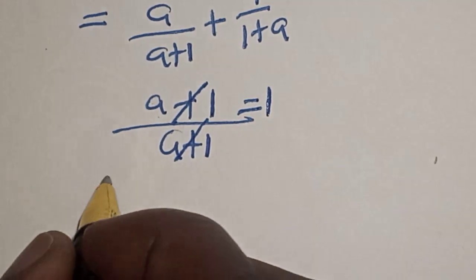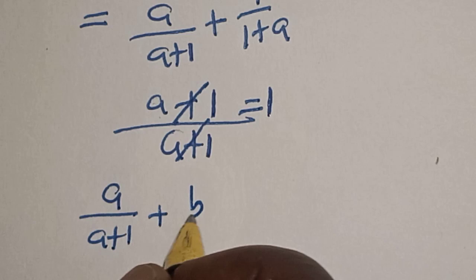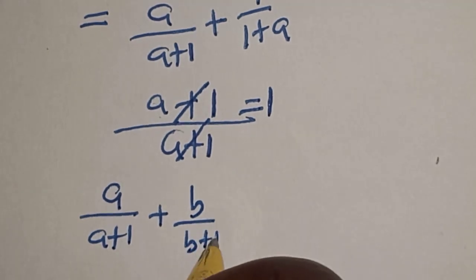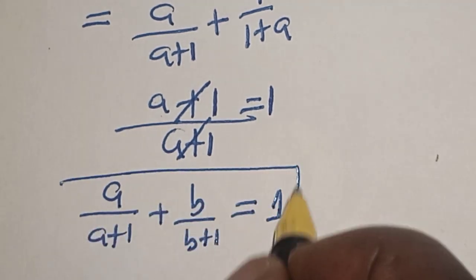So therefore, a over a plus 1 plus b over b plus 1 is equal to 1. That is our final answer.